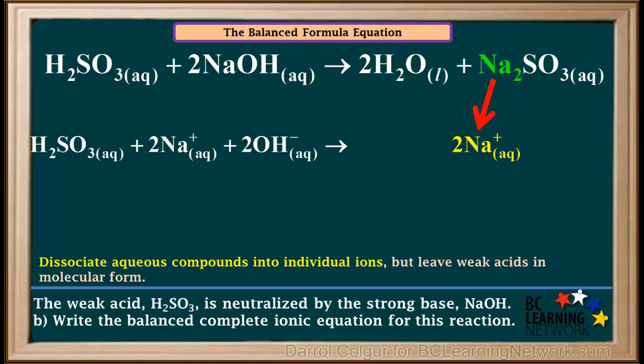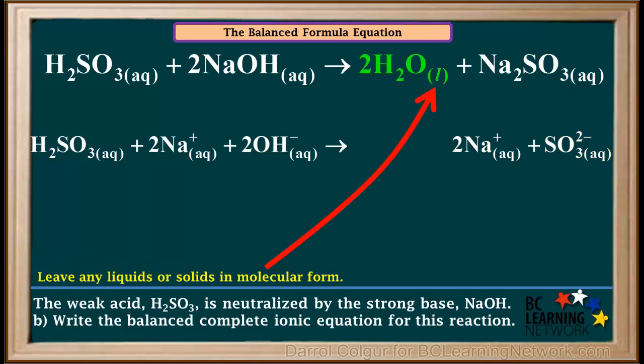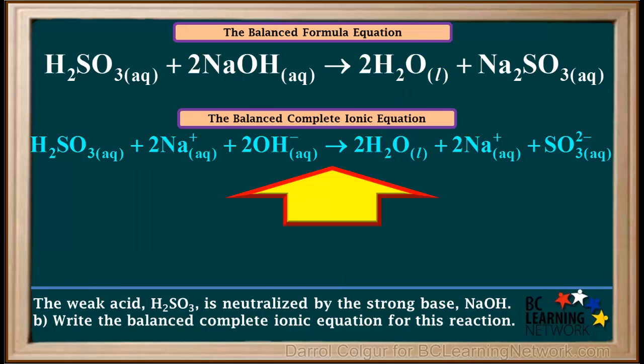The salt Na2SO3 is aqueous and highly soluble, so we dissociate it into 2 Na+ aqueous and SO3 2− aqueous. Because the other product, water, is a liquid, we leave it in molecular form, so we write 2 H2O liquid in the complete ionic equation. We've now completed the balanced complete ionic equation. Check this yourself to make sure all atoms and charges are balanced.